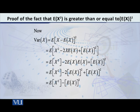E[X] whole square is a constant because E[X] is the mean, and squaring it gives a constant. Therefore, the expected value of a constant is equal to that constant. So we get: E[X²] minus 2 times (E[X])² plus 1 times (E[X])². Combining these, we get E[X²] minus (E[X])².